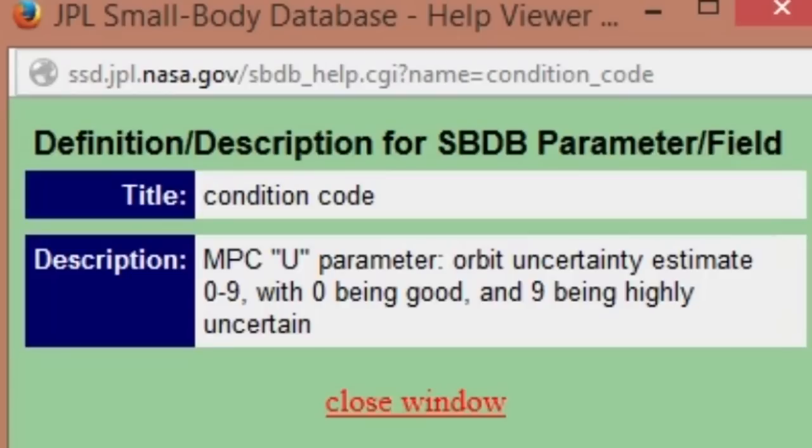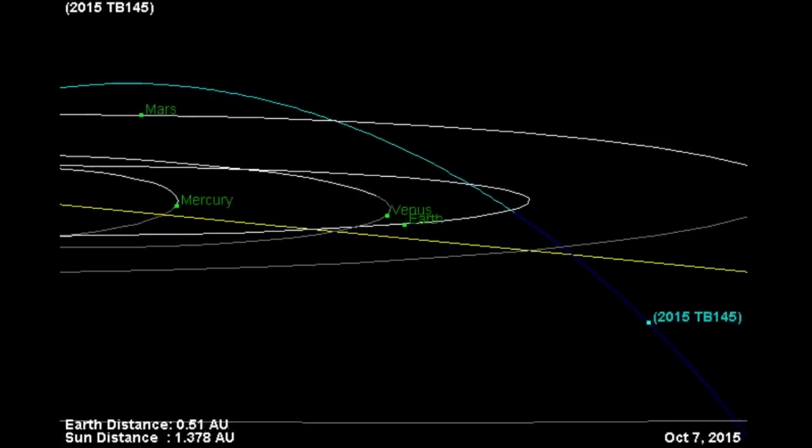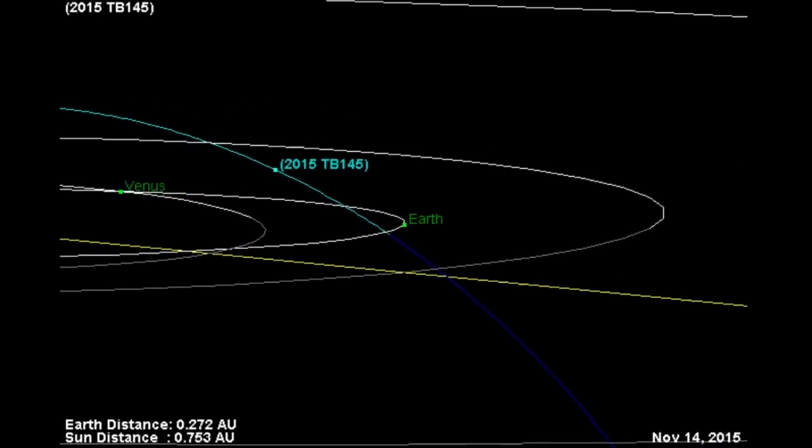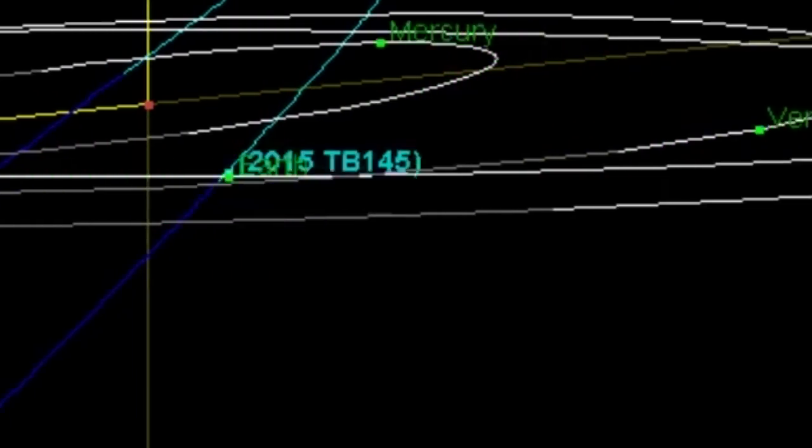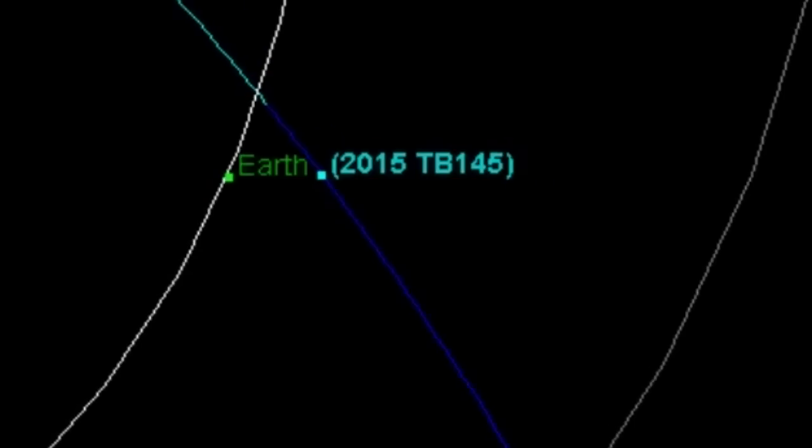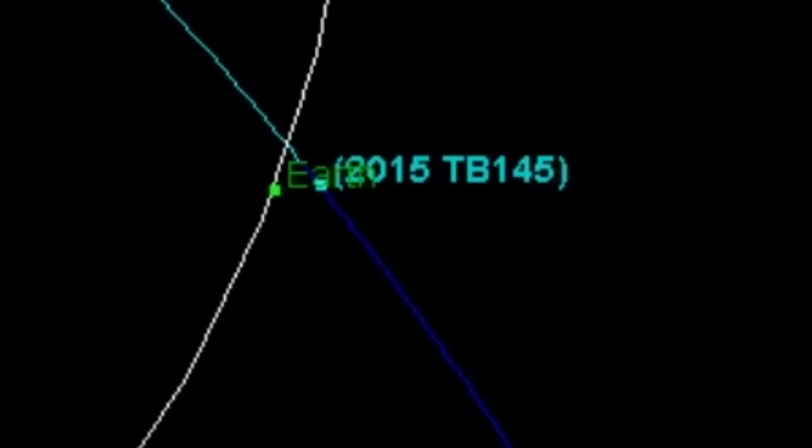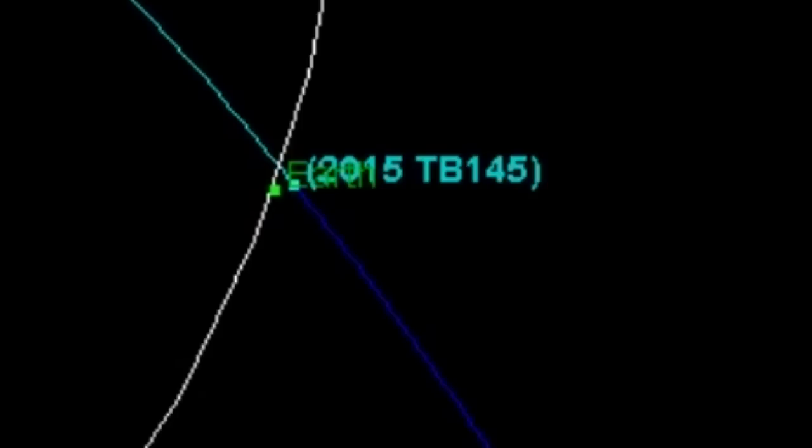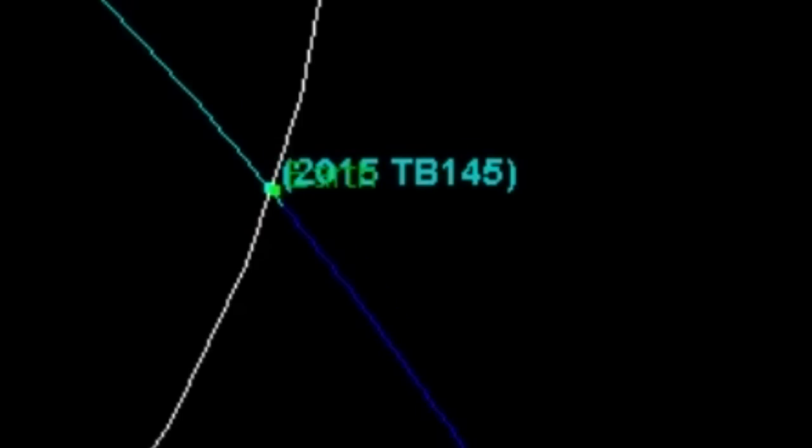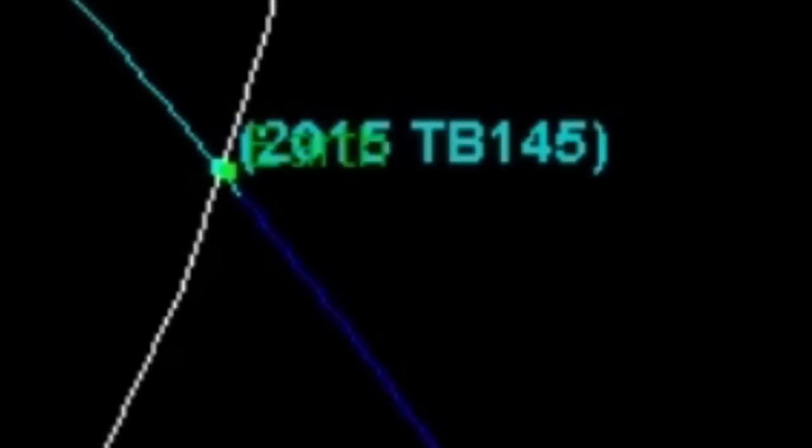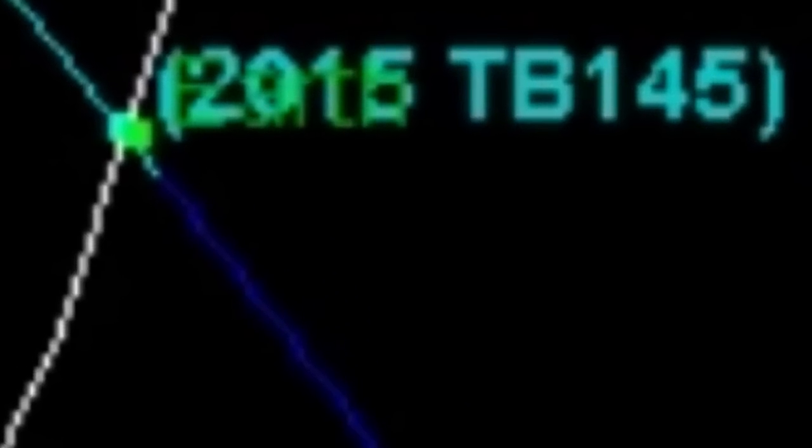Orbit uncertainty estimate: 0 to 9, with 0 being good and 9 being highly uncertain. Is this the much-heralded asteroid of doom? What percentage of fail is in a condition code of 8? Because if you're flipping it around on grades, that would make it sound like a D-minus. It's only one away from the worst. So we figured it out to a D-minus level.